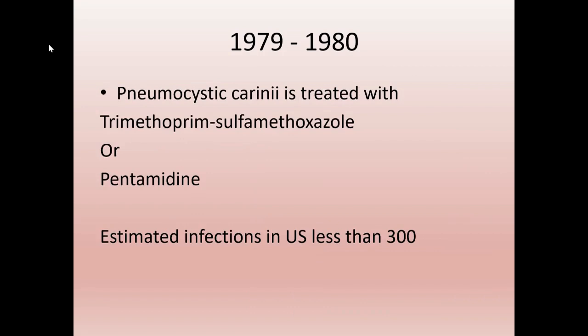In 1979 and 1980, we started noticing clusters of people dying. U.S. infections were around 300. The CDC tracks bad strains of pneumocystis carinii through trimethoprim, cephalosporins, or pentamidine — anytime someone gets prescribed those, it gets flagged and sent to the CDC so they can make sure an epidemic isn't forming.